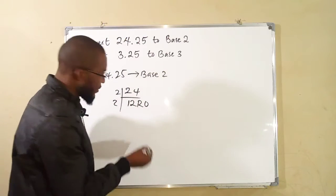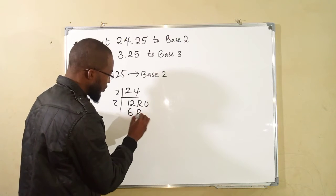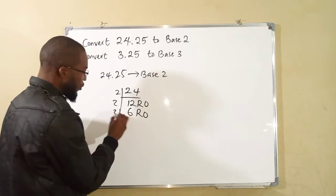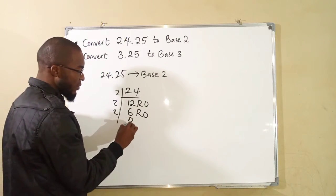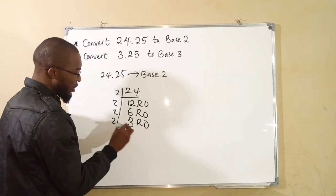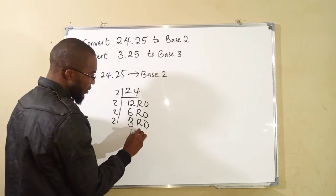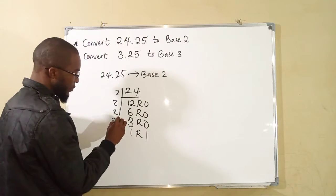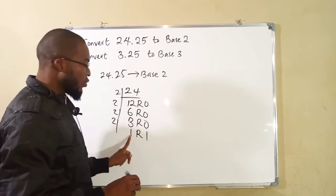2 into 12 is 6 times without remainder. 2 into 6 is 3 times without remainder. 2 into 3 is 1 with remainder of 1. 2 can no longer go into 1.